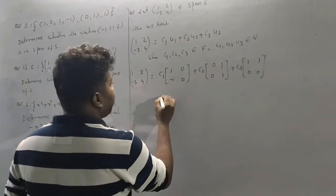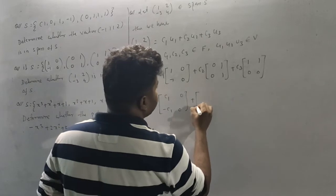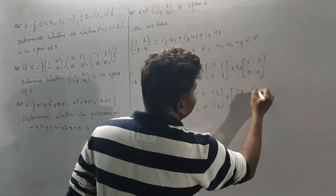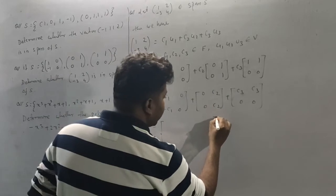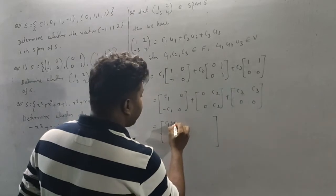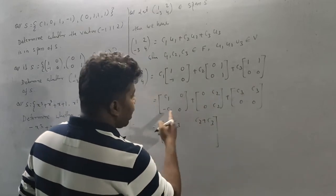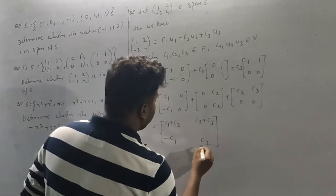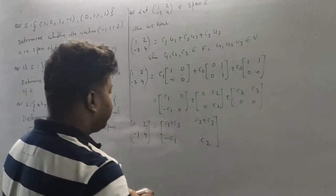Expanding the linear combination: C1·(1,0,-1,0) + C2·(0,1,0,1) + C3·(1,1,0,0). Grouping by component gives: C1 + C3, C2 + C3, -C1, C2. We can now set up the system of equations by comparing both sides.